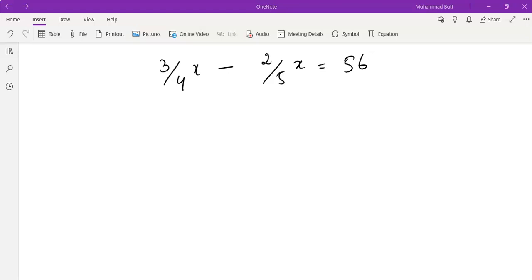Sounding good? This is the last question of your assignment. 3 by 4x minus 2 by 5x equals to 56.